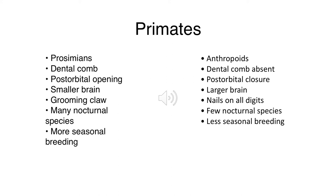Finally, prosimians have a more seasonal breeding pattern. Like other mammals, they tend to have babies in spring. With Haplorhines, it's less seasonal - humans, for example, do not have a breeding season and babies can be born any time of year.